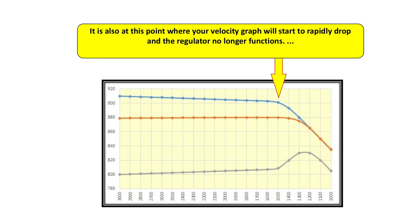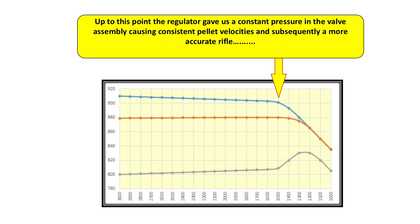And subsequently, your velocity starts to rapidly decrease, shot after shot. And obviously with a change in velocity, there will be a change in impact point, making your rifle less accurate or the point of impact will continue to shift as the pressure continues to drop inside the reservoir.